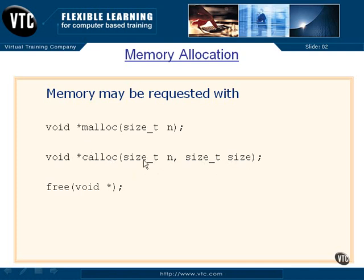When you're done with the memory, as a good programmer, you have to free it up. You pass the pointer — received from malloc or calloc — into free, which tells the operating system to release that memory since it's no longer being used by our program. That's a very simple memory allocation. There's not a lot to it to ask for memory for structures or other things in the program — it's really quite simple.